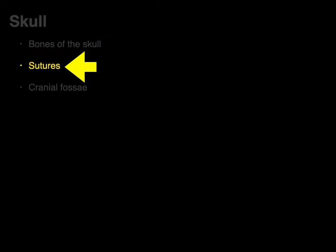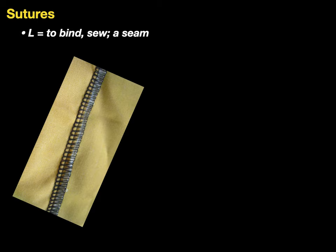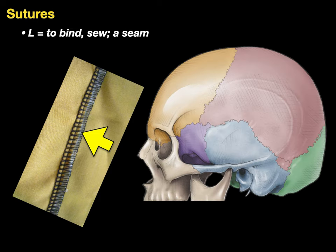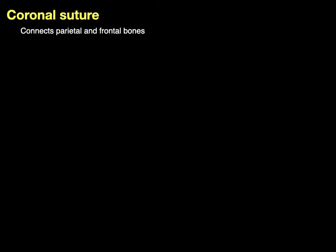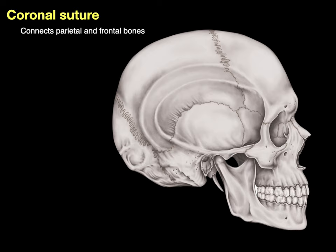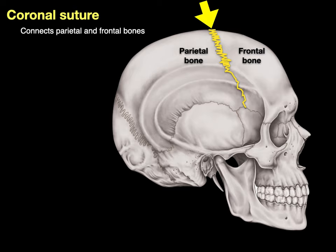Now let's go from bones to sutures. Sutures is Latin to bind, to sew, or a seam — it's like a stitch, because that's what it looks like. Early anatomists said, what also looks like a stitch? That. So they called it a suture. The first suture is the coronal suture. It connects the parietal and frontal bones. There are the parietal and frontal bones, and there is the coronal suture — it courses in the coronal plane.